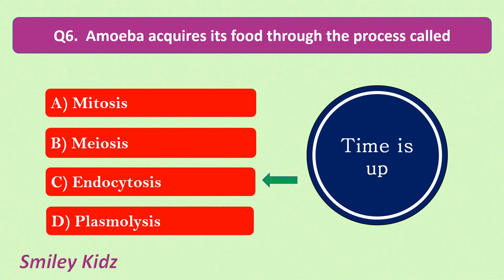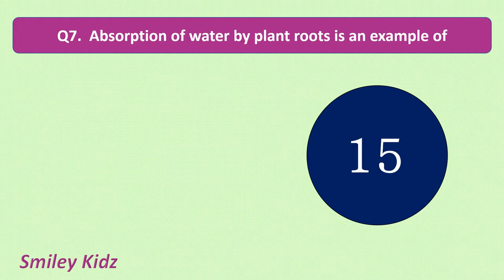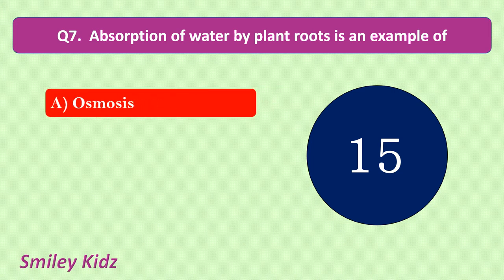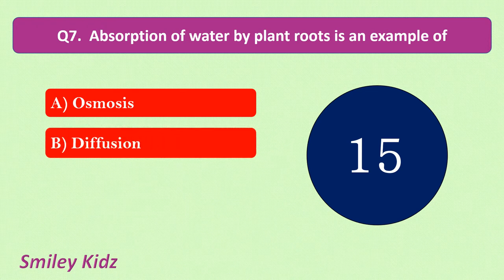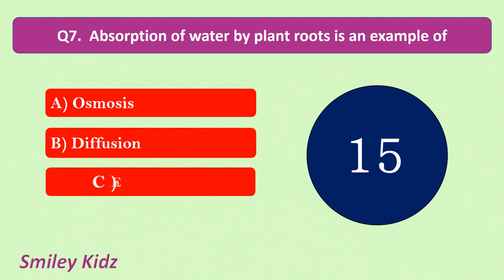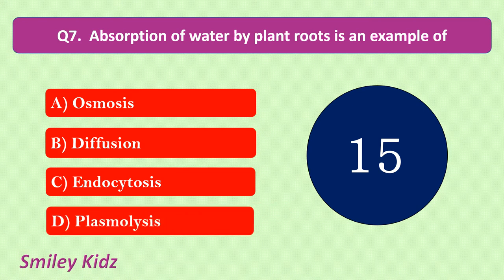Question number 7. Absorption of water by plant roots is an example of. Your options are: osmosis, diffusion, endocytosis, plasmolysis. Your time starts now.